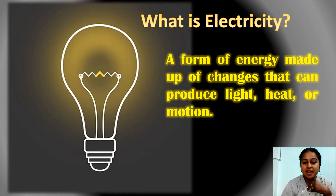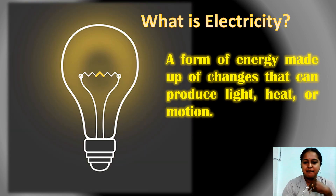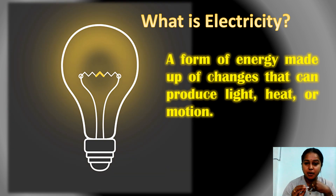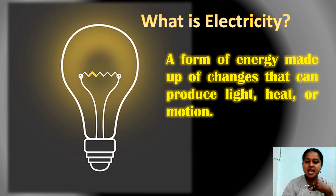Light means when you switch on, you can see the bulb will light up. And if you leave it for a long time, the bulb will get heat — that means hot a bit. And motion — you can see something like the television, you can see the visual. That is the meaning of motion. So this is the meaning of electricity.